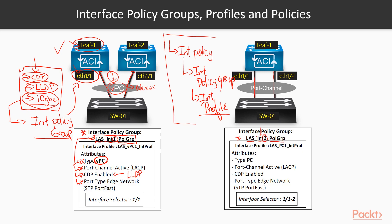Naming is super important in ACI — very, very important that you properly name things. Because if you make a change to a wrong object, it might disrupt a lot of configurations attached to that object. So it's very important that you label or name things properly.